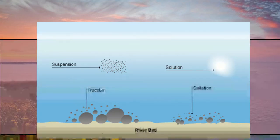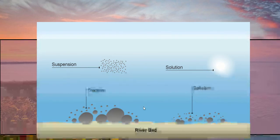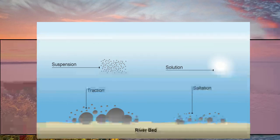The last one, the fourth one, is traction. This is where the bigger fragments of rock — essentially boulders — the waves don't have the energy to pick these up and bounce them like saltation, but they have enough energy to turn or roll these large boulders across the seabed or riverbed. So these are rolled across the floor, a bit like a bowling ball moving along the seabed.